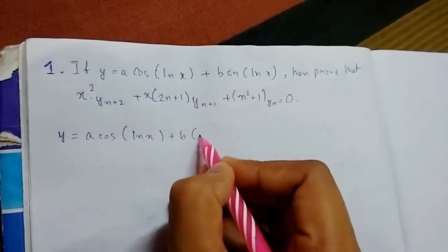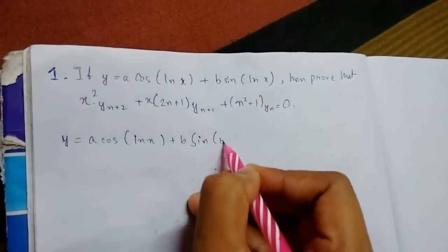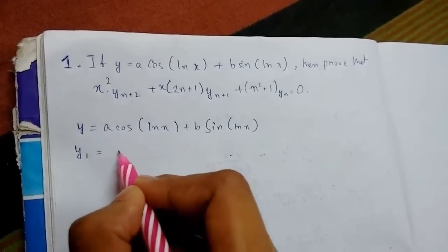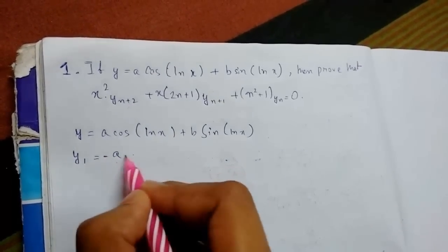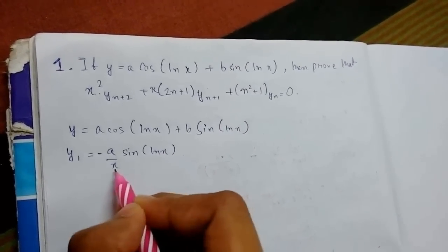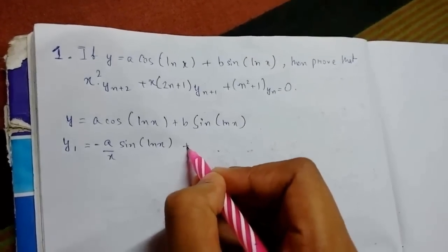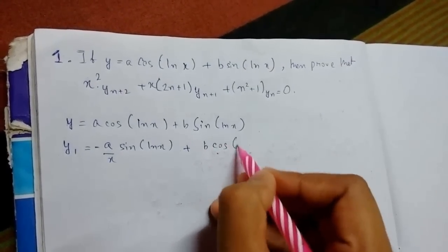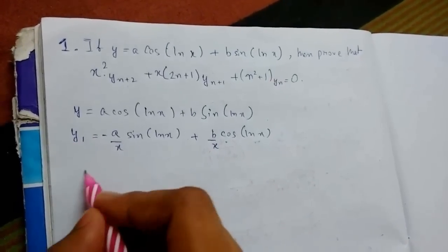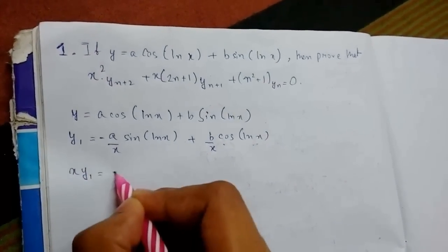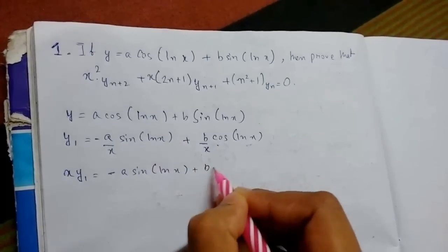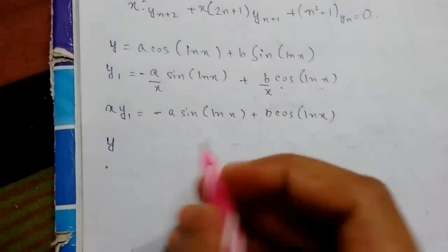To do this, we start with y = a·cos(ln x) + b·sin(ln x). Differentiating once, y₁ will involve minus a·sin(ln x) times (1/x) for the first term, and b·cos(ln x) times (1/x) for the second term. Taking x to the left hand side: x·y₁ = −a·sin(ln x) + b·cos(ln x).